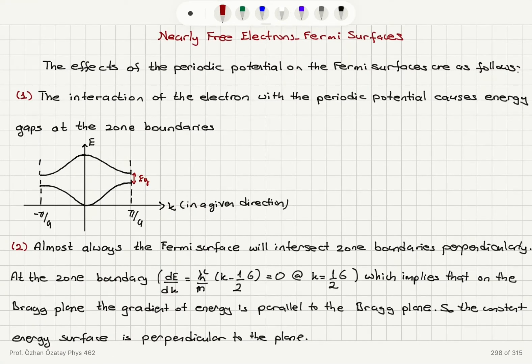Number two, almost always the Fermi surface will intersect zone boundaries perpendicularly. At the zone boundary, if you look at dE/dk, it's going to be zero. So here we have the energy gap which implies that on the Bragg plane the gradient of energy is parallel to the Bragg plane. So the constant energy surface will be perpendicular to the plane.